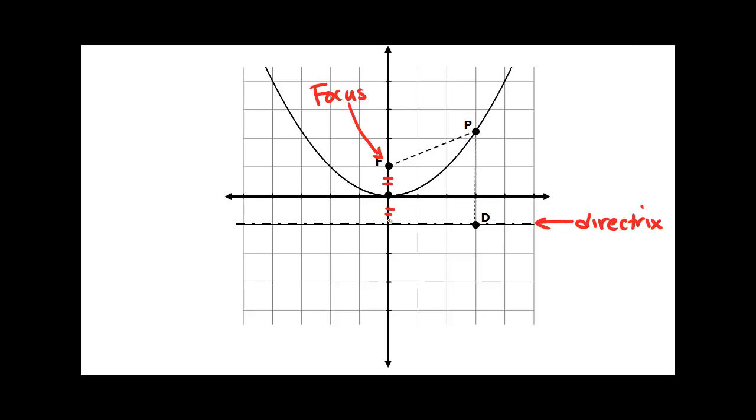All points P that lie on the parabola are equidistant from the focus and the directrix. So let's take this as an example right here. If I go from point P straight down to my directrix along the perpendicular, that distance is going to be equivalent to the distance from P to my focus. So let's mark those with tick marks.